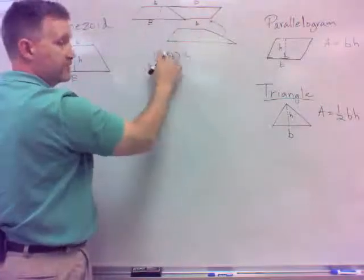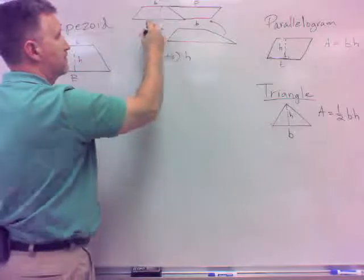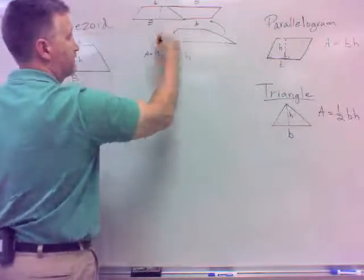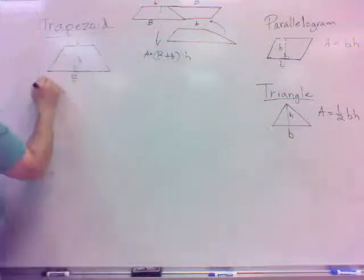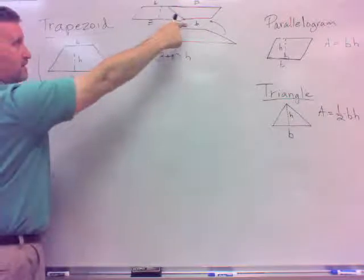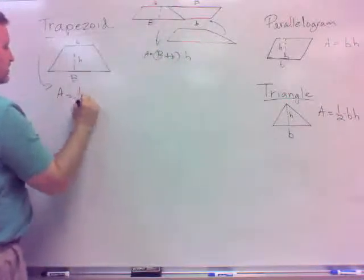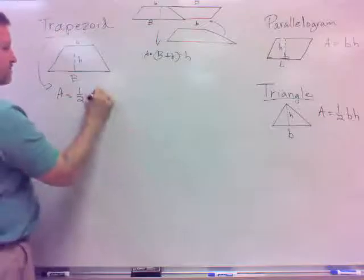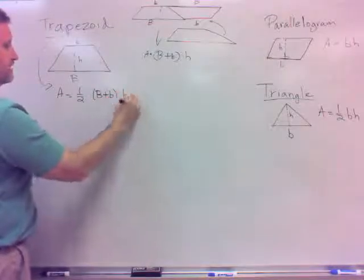That's the parallelogram that those two make. So what would the trapezoid be? So the area of this whole thing is this. So the trapezoid is going to be half of that, isn't it? Because that is made up of two. So it's a half, again, like the triangle, times Big B plus Little B times h.